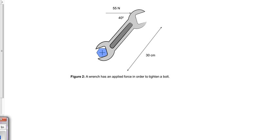In this question, we have a simple torque question. There's a bolt here we want to turn with a wrench. And we're applying 55 Newtons to the wrench a distance of 30 centimeters from the bolt at an angle of 40 degrees to the lever arm.